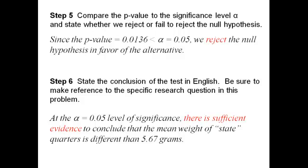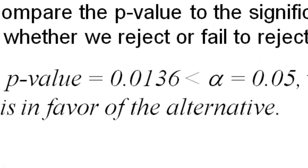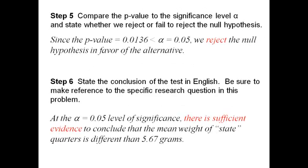So step 5: we say that the p-value of 0.0136 is less than alpha of 0.05, so we reject the null hypothesis in favor of the alternative.